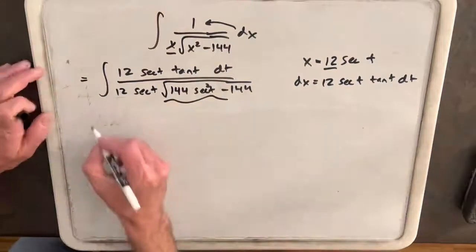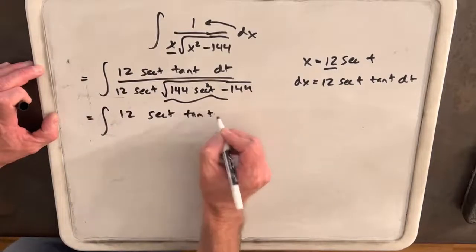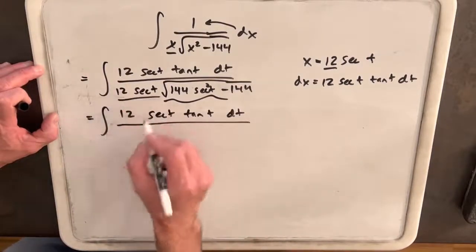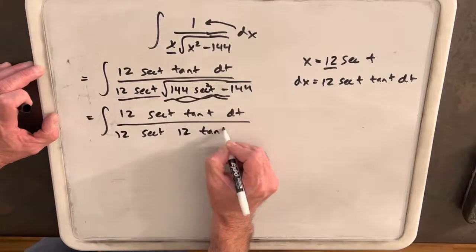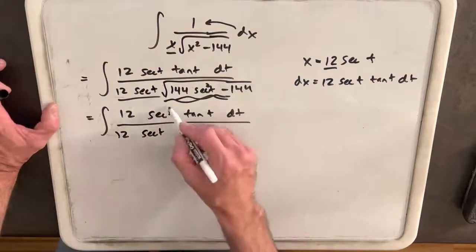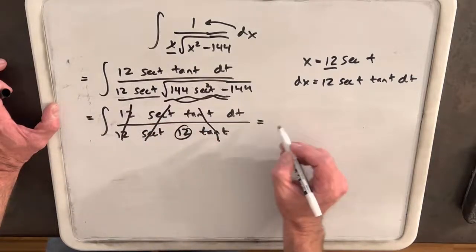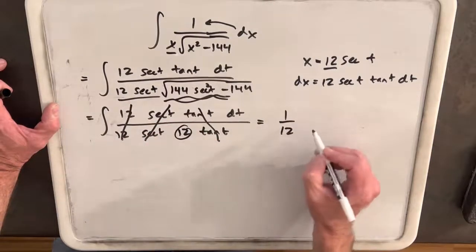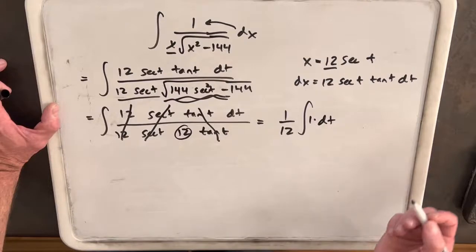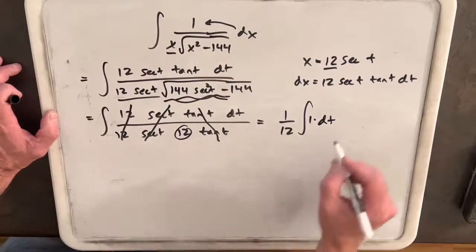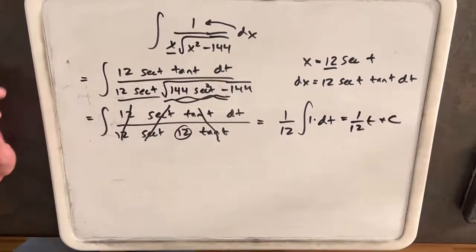Rewriting with what we just found, we'll keep our numerator the same. We'll keep this piece the same: 12 secant t, but we found this to be 12 tan t. The beauty is the secants cancel, the tans cancel, one of the twelves cancel, but we still have one twelve. We're left with 1/12 dt, so we're just integrating one. That gives us 1/12 t plus c.